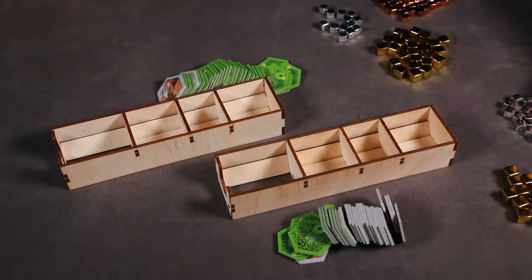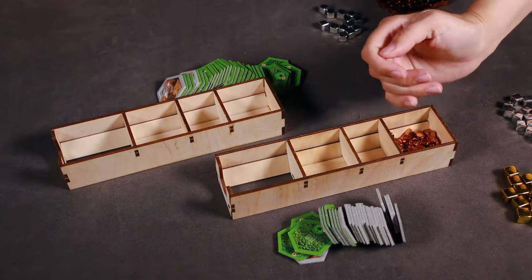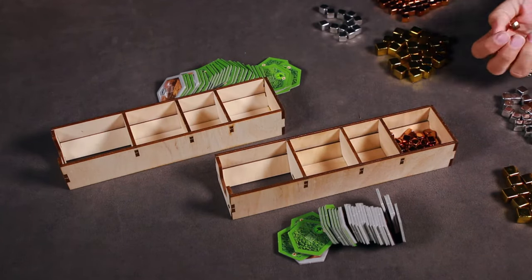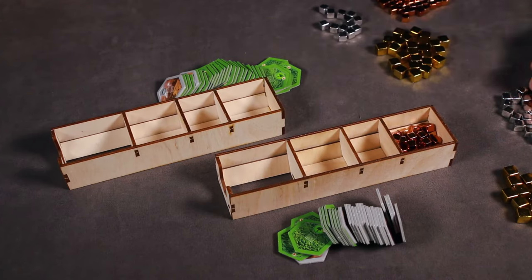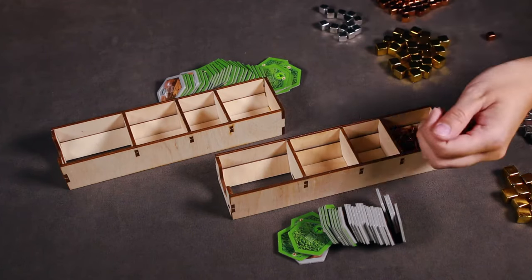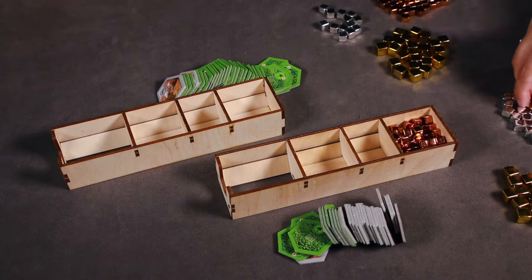The two identical token trays are used to store the gold, silver, and copper resources, as well as the greenery city tiles.